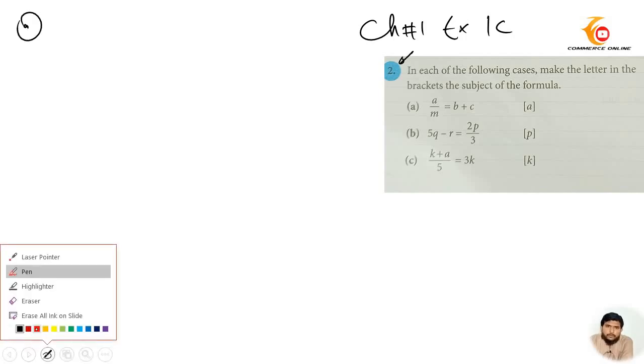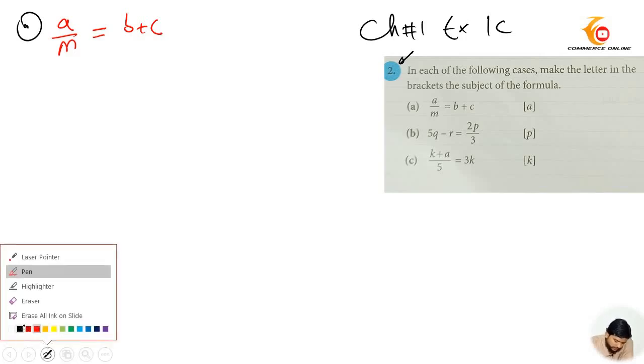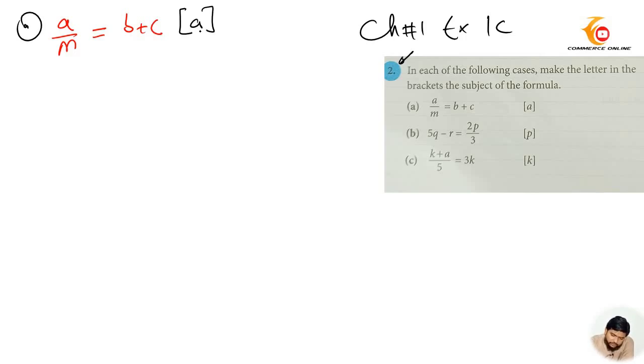Let's move to our first question which is A/M equals to B plus C. We need to find out the value of A, which means we need to solve for the equation A. First I will write solution, then I will write the question: A/M equals to B plus C.